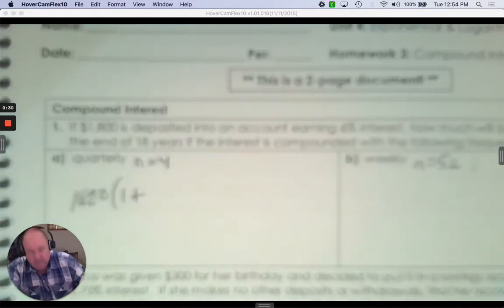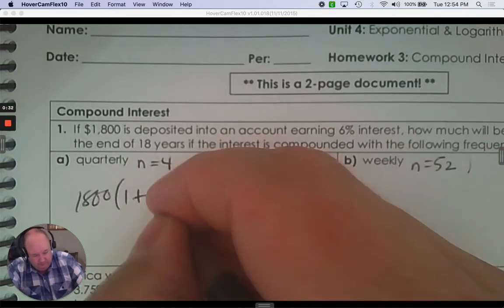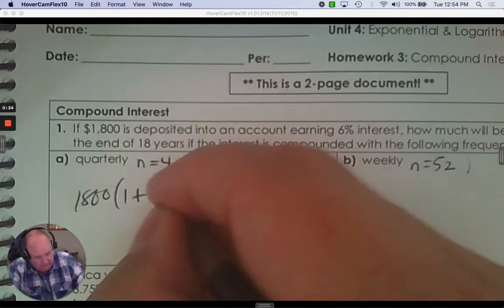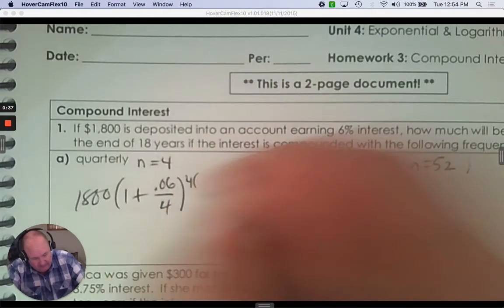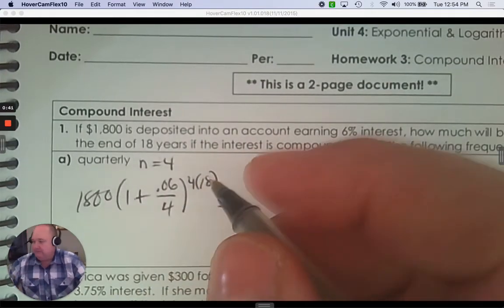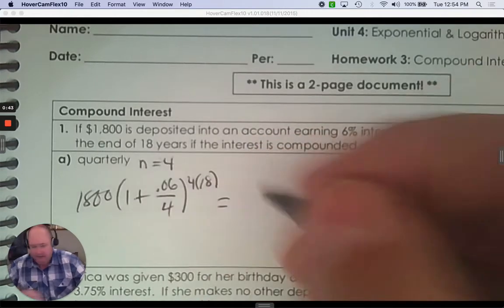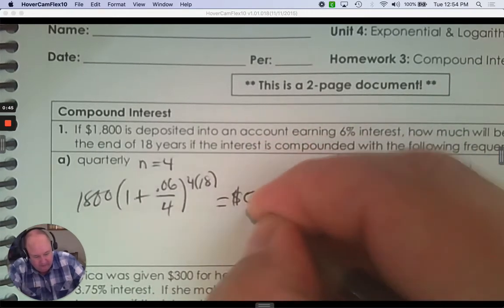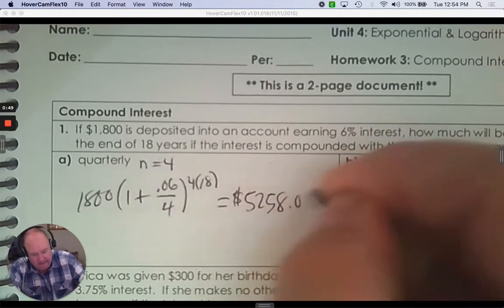So $1,500, 1 plus the interest rate as a decimal, divided by 4, 4 again, and then how many years? So put that in your calculator. And you get $5,258.08.